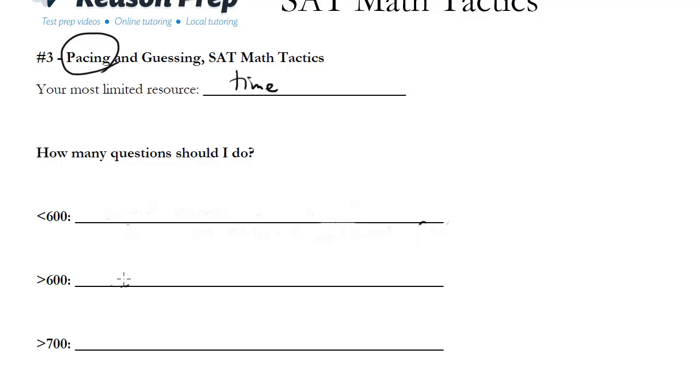It depends obviously on what your score goals are. If you're going for less than a 600 in the math section, you basically want to avoid almost all the hards.